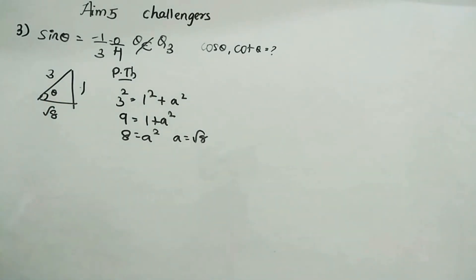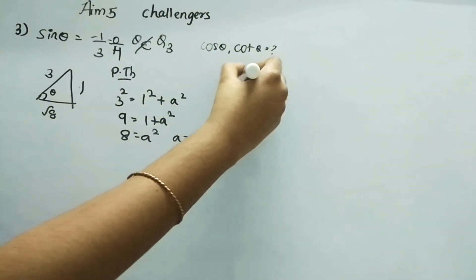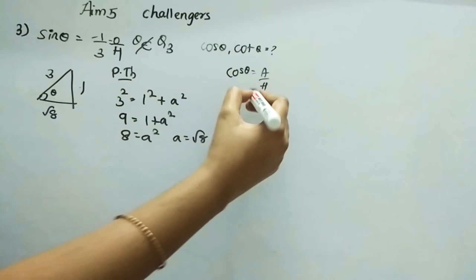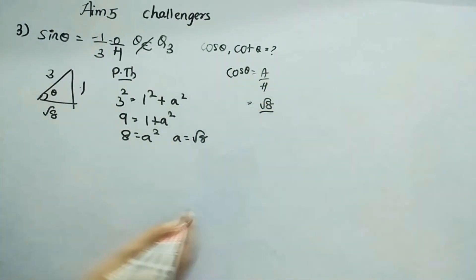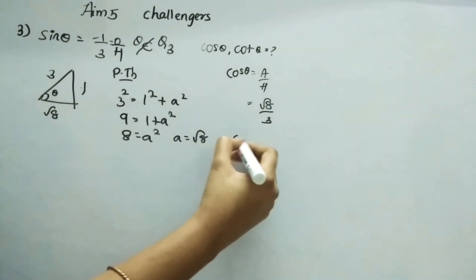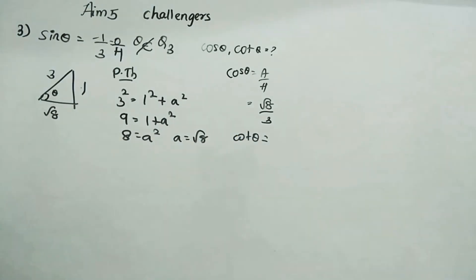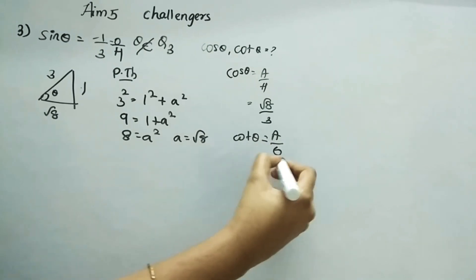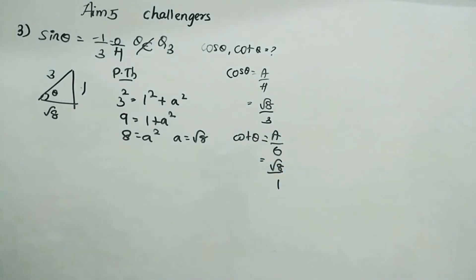Now we find cos θ: cos θ is adjacent by hypotenuse, which is root 8 by 3. And cot θ is adjacent by opposite, which is root 8 by 1, so that is simply root 8.